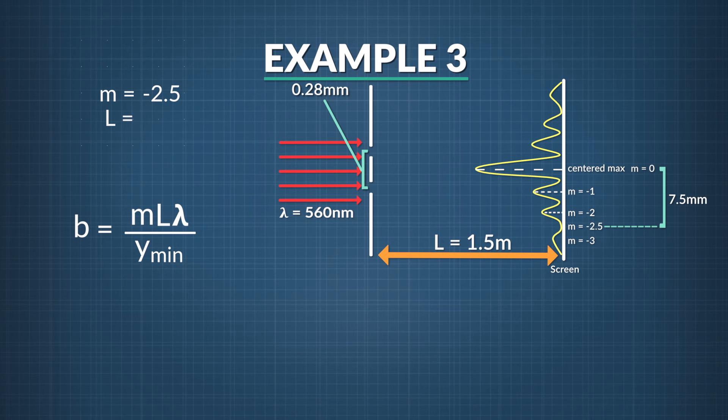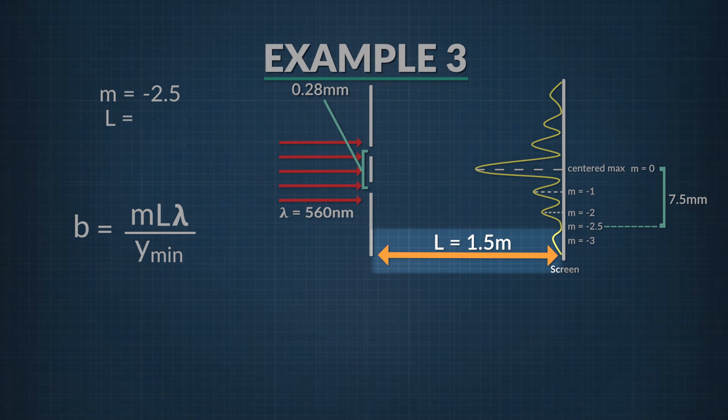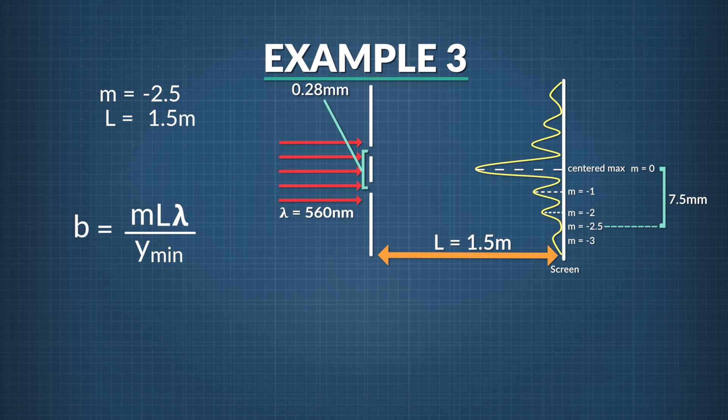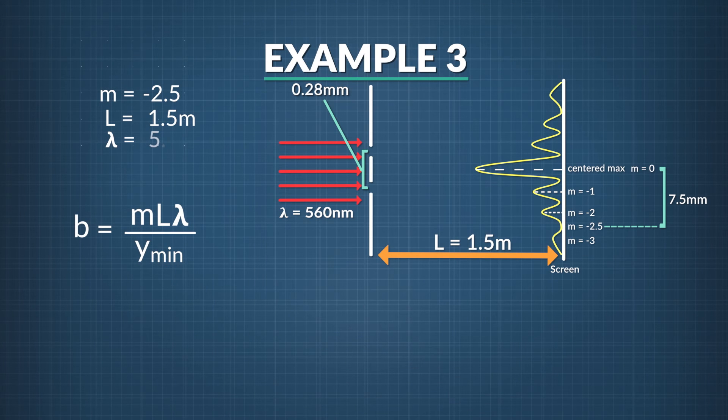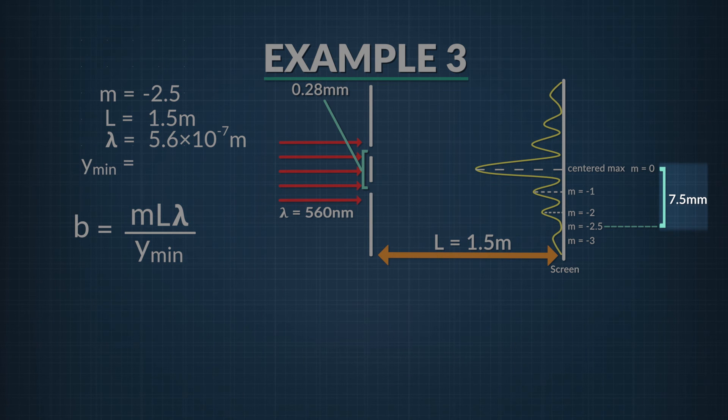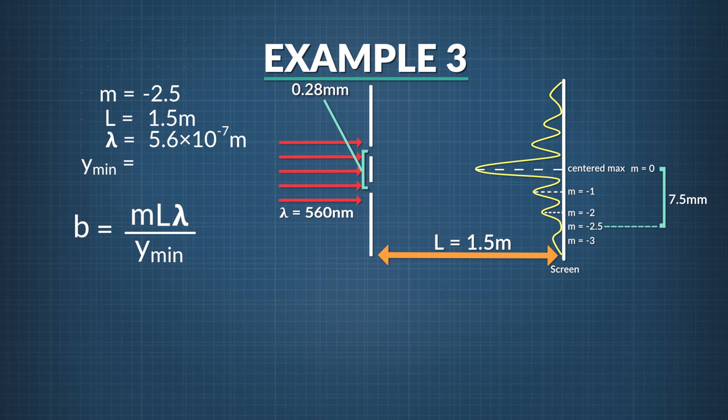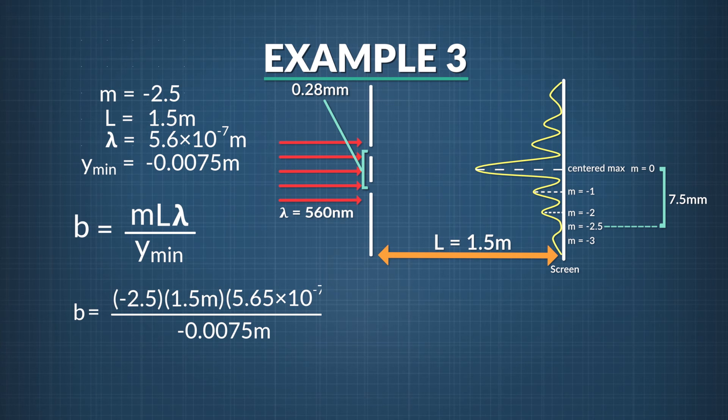L, the distance between the slits and the screen, is given to be 1.5 meters. Lambda, the wavelength of the red laser, is 560 nanometers, or 5.6 times 10 to the negative 7 meters. And y_min, the position of the third dark spot, we measured to be 7.5 millimeters below the central maximum, or negative 0.0075 meters. Let's insert all these values into the equation for b.